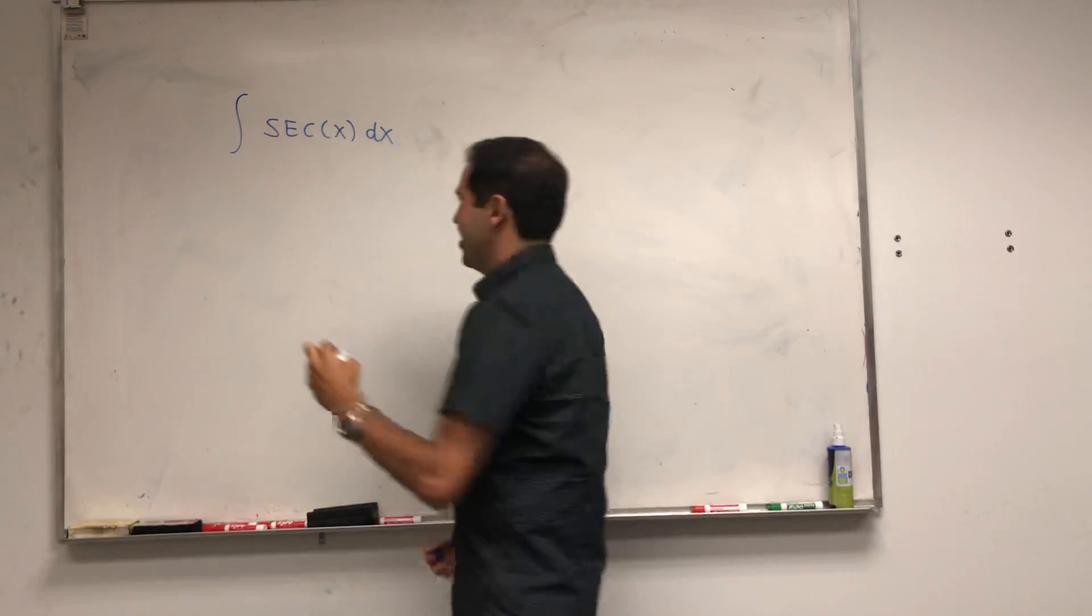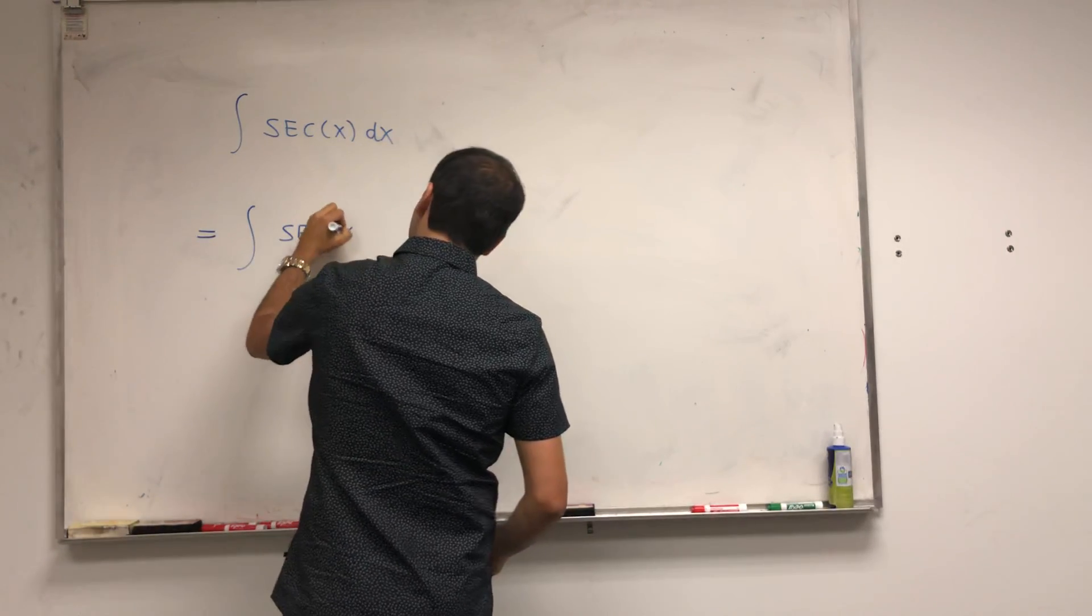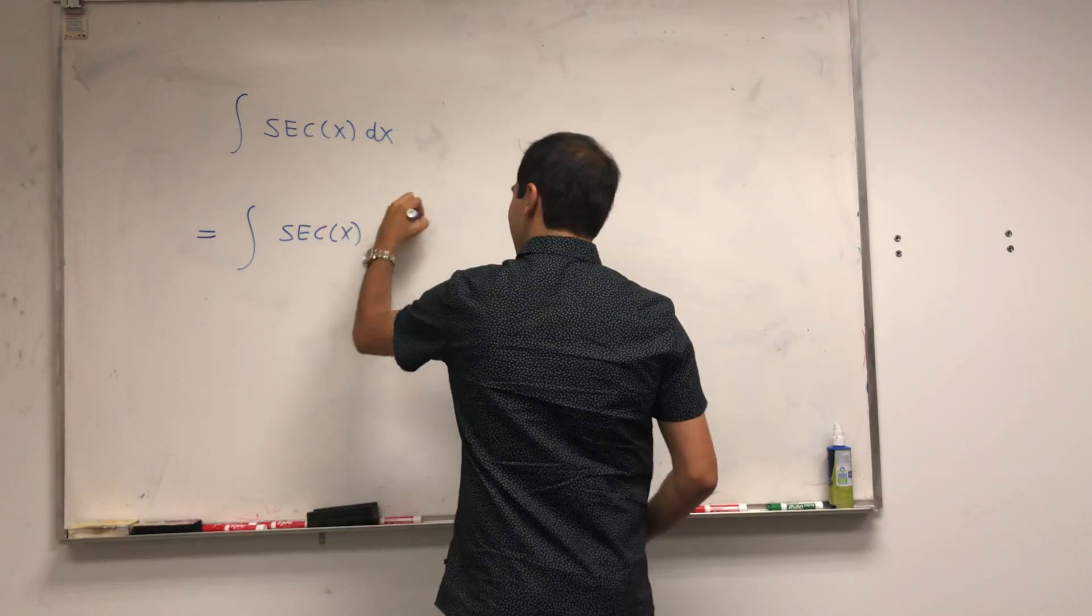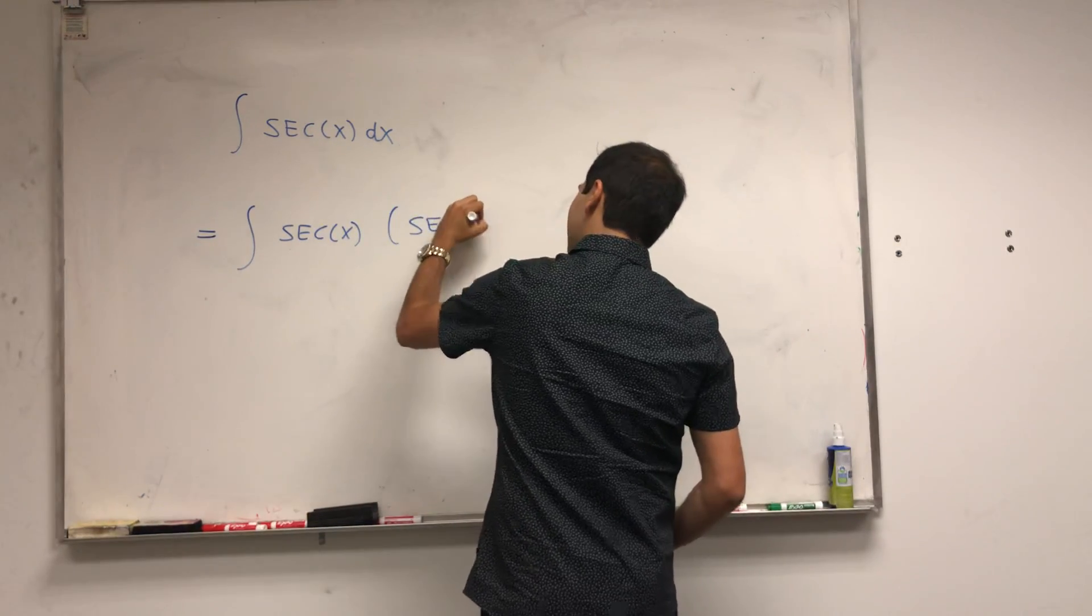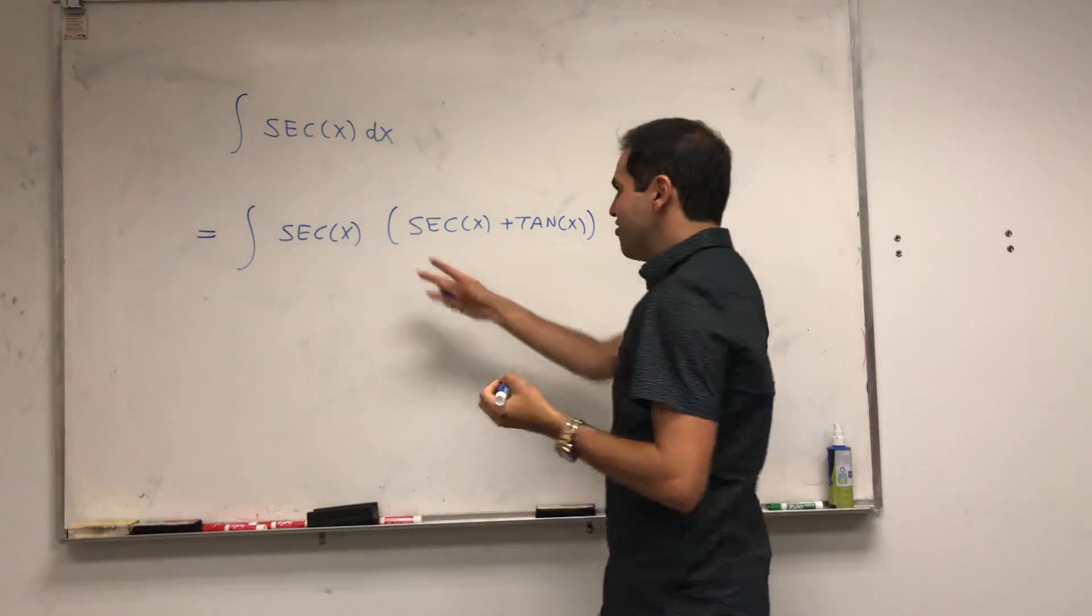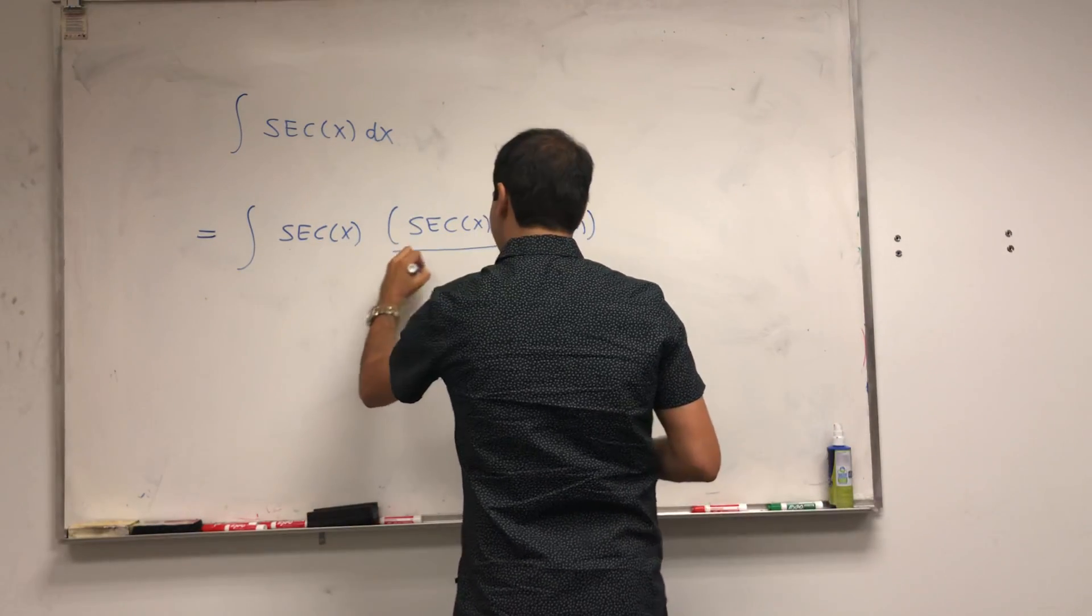And here is the trick. Take secant and multiply it by the sum of the two things that I just mentioned. So, secant plus tangent. But of course, to make this legit, you also have to divide by secant plus tangent.